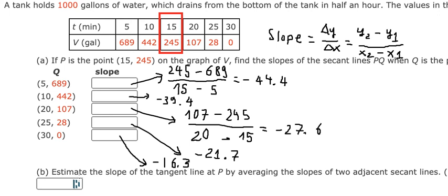Question B: estimate the slope of the tangent line at P by averaging the slopes of two adjacent secant lines. So we want to find the slope at this point, but we need to find the average of two slopes. That should be the slopes at t=10 and t=20.